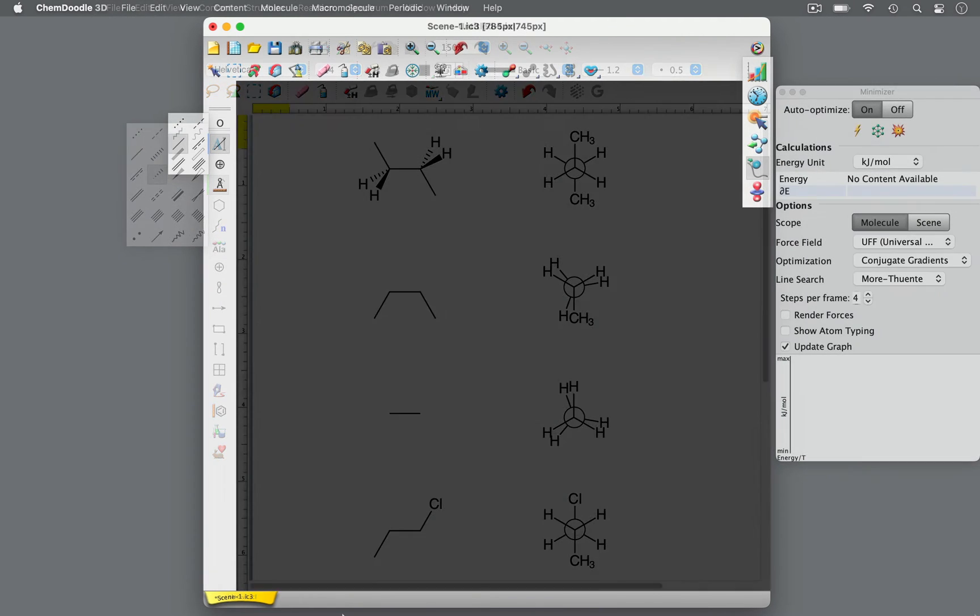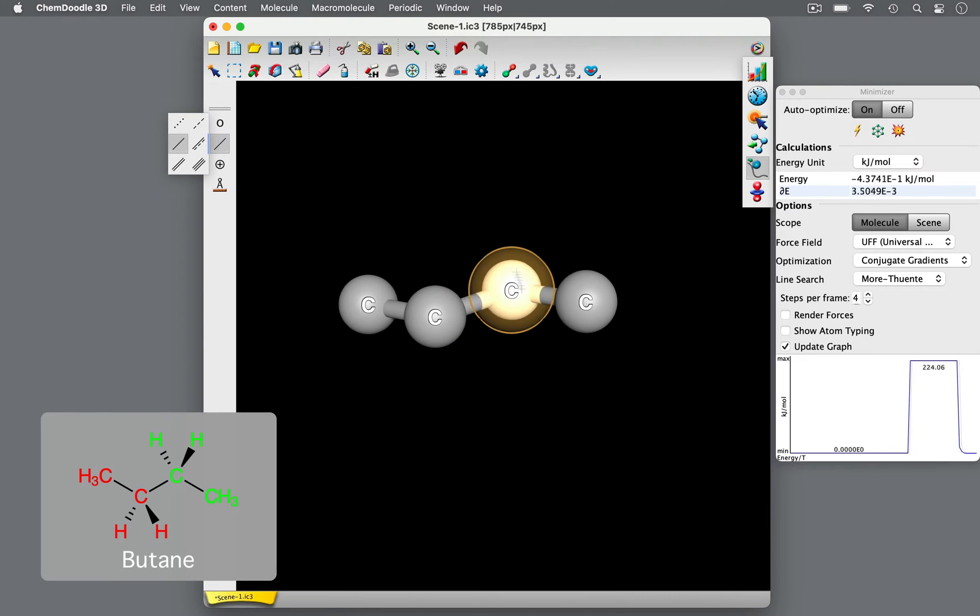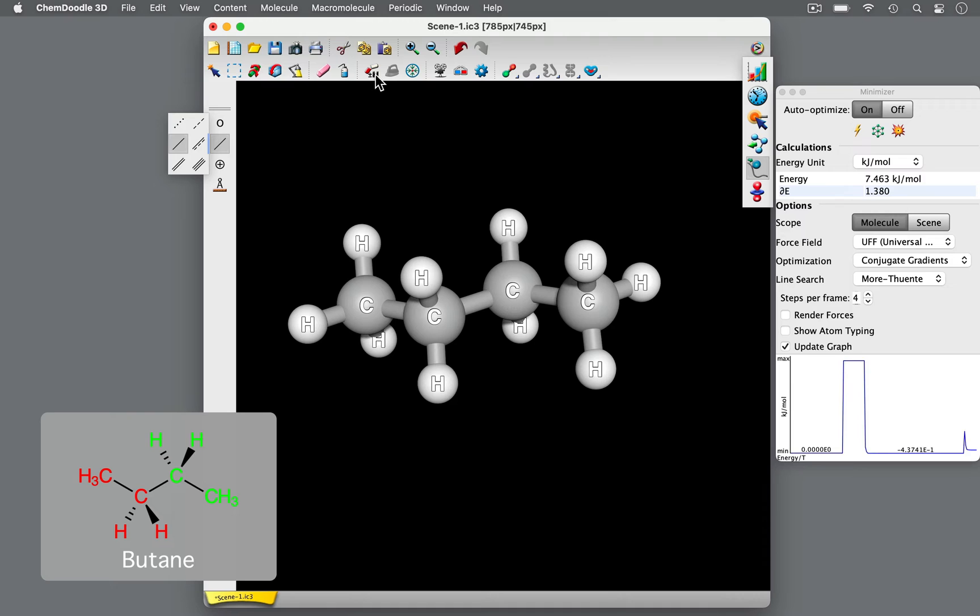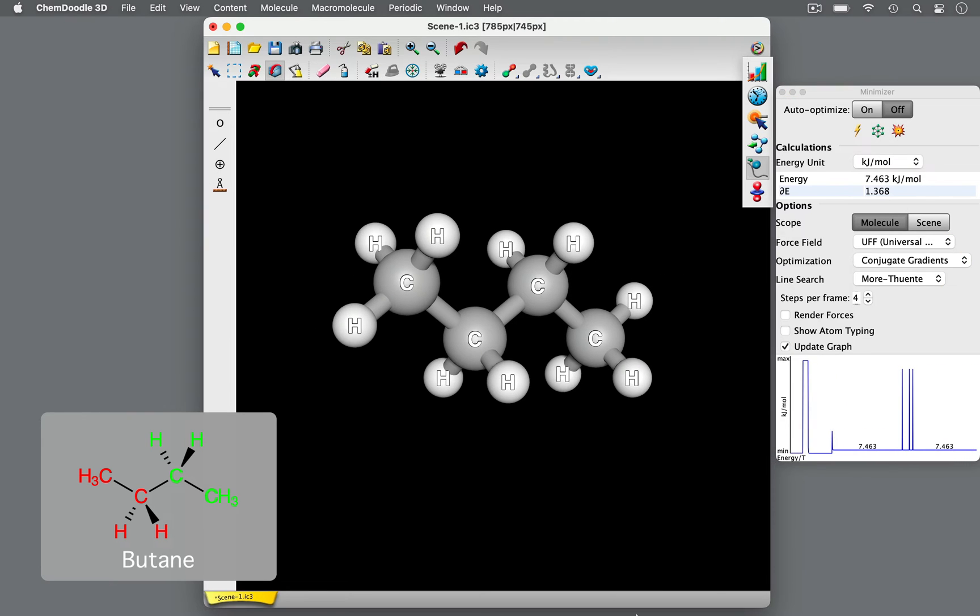To better understand Newman projections, let's look at butane in 3D. Butane has a four carbon backbone with 10 hydrogen atoms attached. To aid in visualizing, let's color the atoms red and green in the 3D molecule, just as it is in the 2D wedge and dash projection.